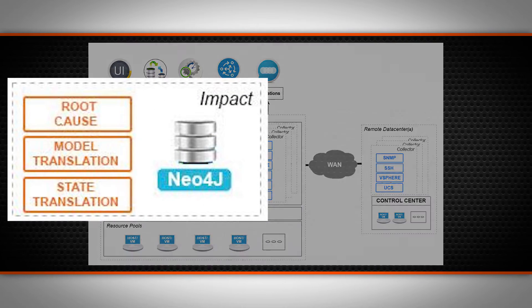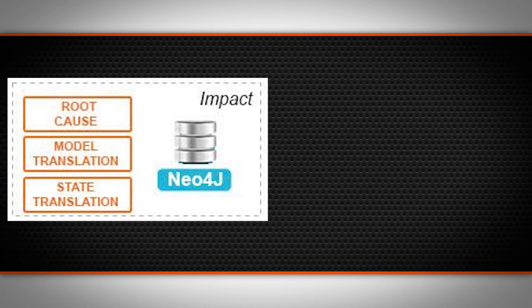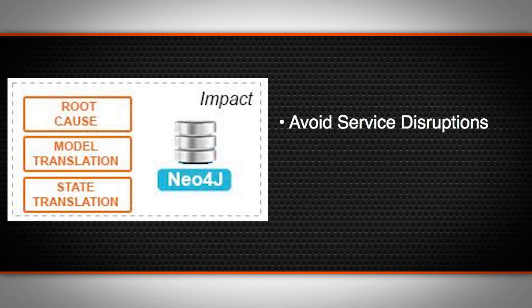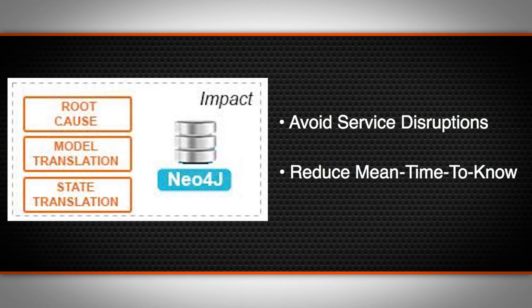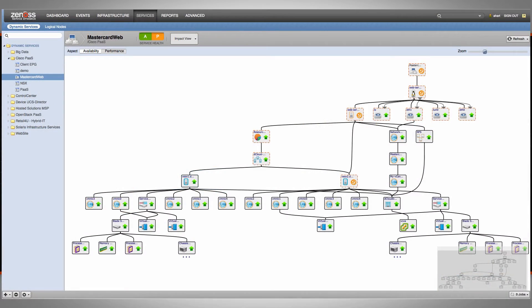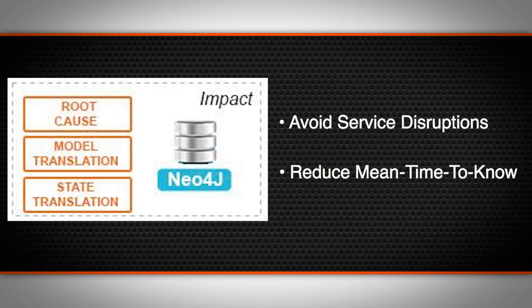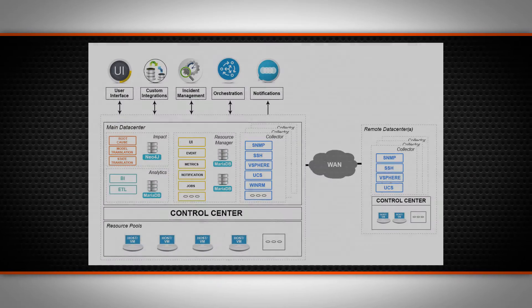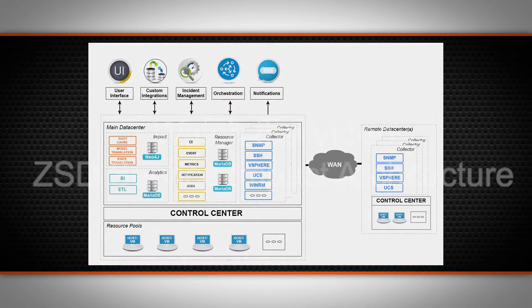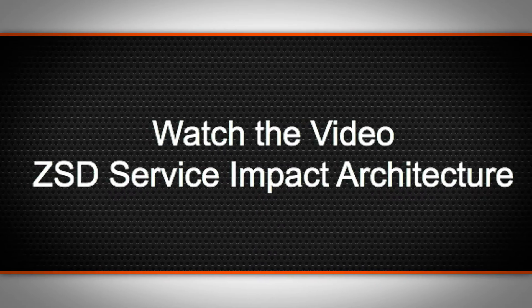Service Impact is the XenoService Dynamics key differentiator. It helps you avoid service disruptions and reduce mean time to know on service issues. It houses the patented service impact model where relationships and dependencies are mapped between managed resources and the services they support. It uses advanced modeling and domain awareness logic to pull in all relevant infrastructure elements to complete the service impact model. The architectural components are described in more detail in the video, ZSD Service Impact Architecture.